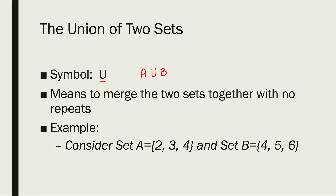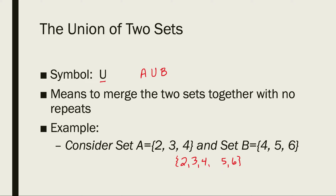For example, if we have set A that has 2, 3, and 4, and set B that has the elements 4, 5, and 6 — if I union the two sets together, I write down everything in A and then everything in B. Now I check for repeats: there are two 4s, so I erase one of them. Now I have A union B, which contains the numbers 2, 3, 4, 5, and 6.